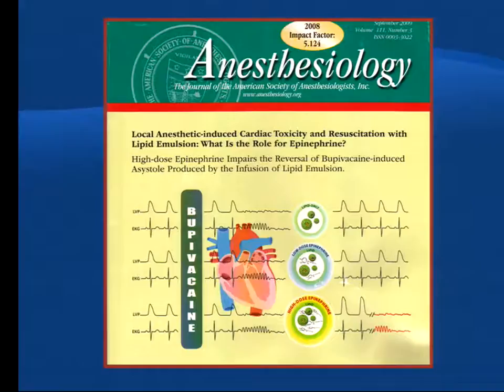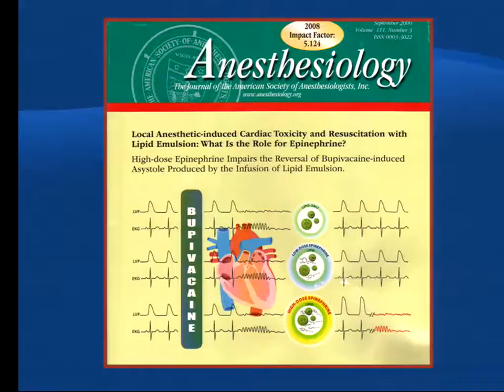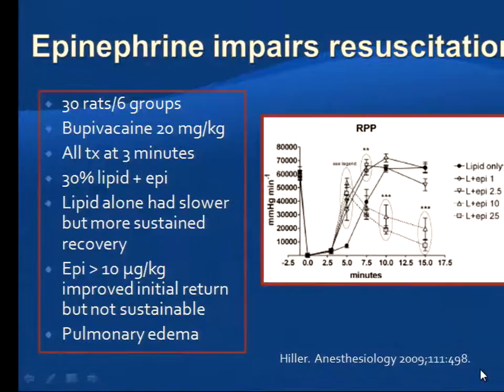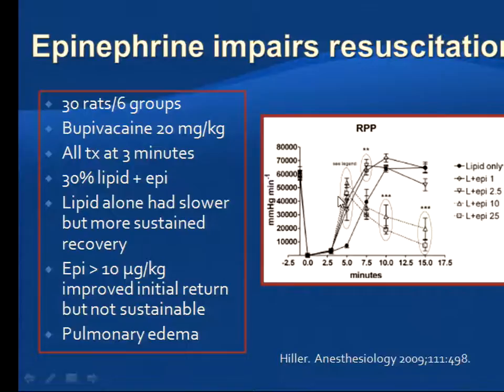Looking at the cover of Anesthesiology with a recurring theme — rat hearts, bupivacaine toxicity, resuscitation with lipid only, low-dose epi, and high-dose epi — we see that high-dose epi just isn't going to cut it. Hiller showed in his group of rats with bupivacaine-induced cardiac arrests treated with lipid and epinephrine in varying doses from 1 to 25 micrograms that rats receiving epinephrine had a quicker recovery, but it was unsustainable. Waiting for lipid, or low-dose lipid with low-dose epinephrine, produced a definitely sustainable recovery.